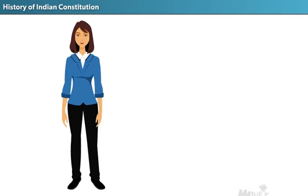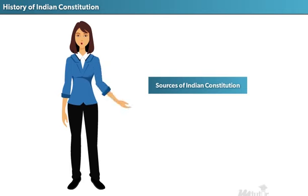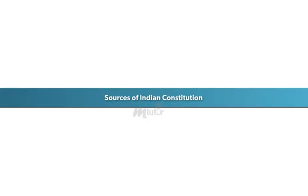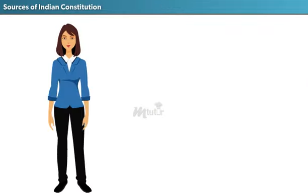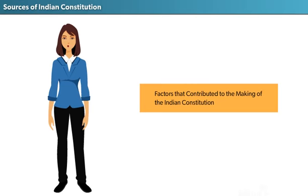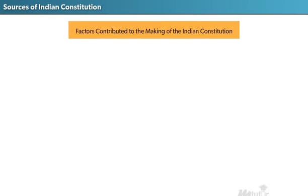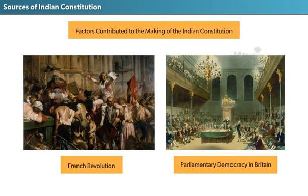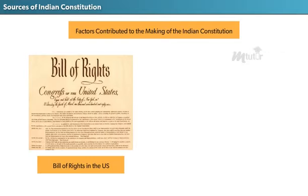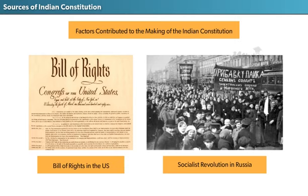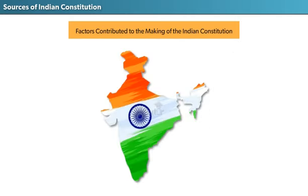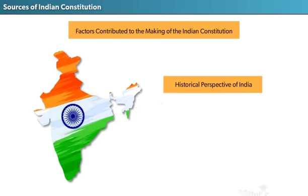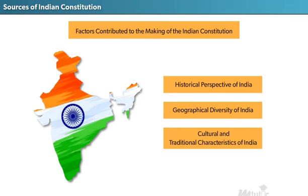Now let me tell you what Sam Daniel told Jacob about the sources of the Indian Constitution. First, I will tell you about all the factors that contributed to making the Indian Constitution. There are four basic factors: the French Revolution, Parliamentary Democracy in Britain, the Bill of Rights in the US, and the Socialist Revolution in Russia. However, the framers also considered the Historical Perspective of India, the Geographical Diversity of India, and the Cultural and Traditional Characteristics of India.